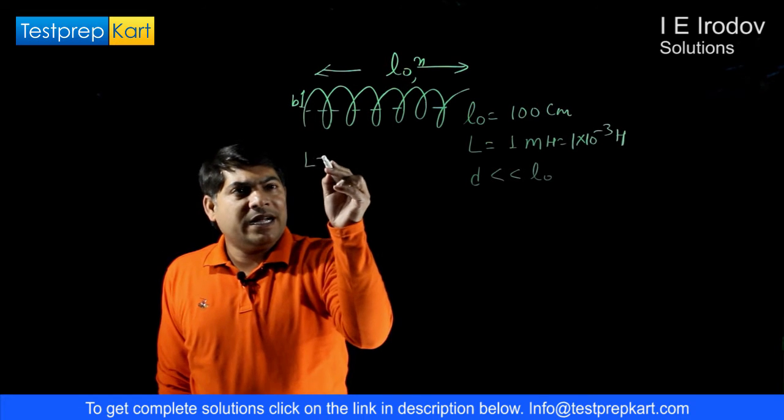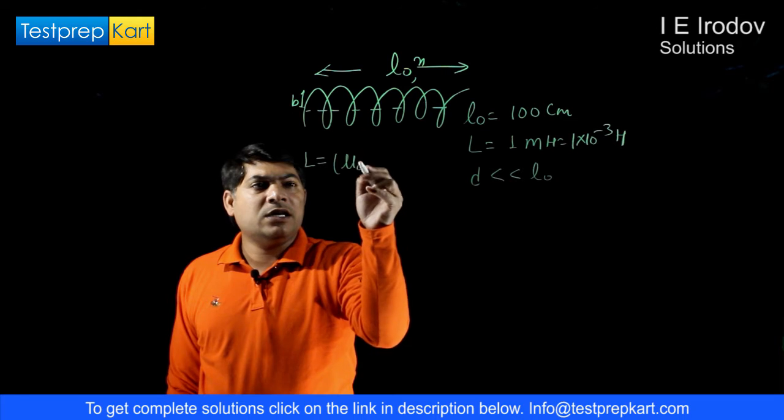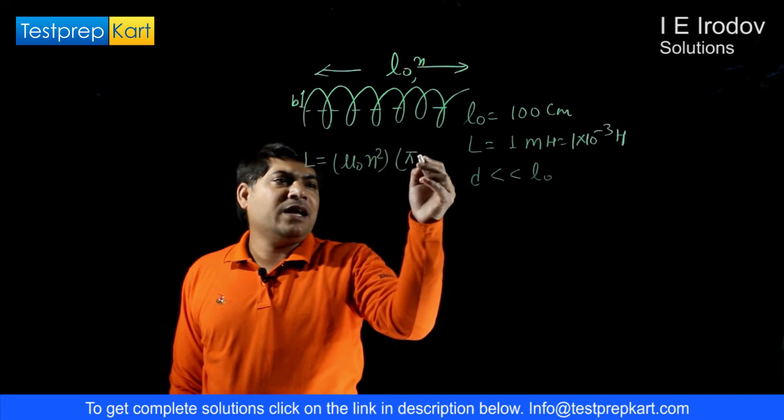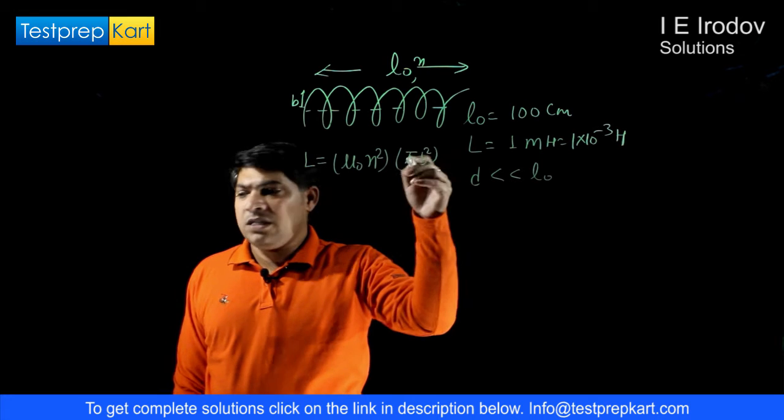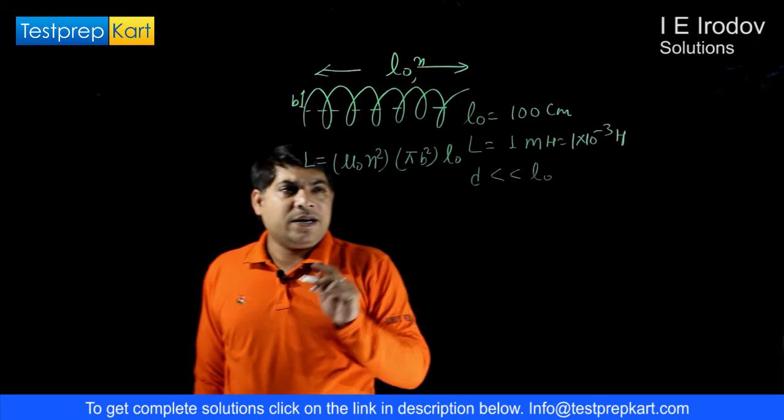Then self-inductance of coil is μ₀n² into area πB², although there is no requirement to write this, and into length of the solenoid.